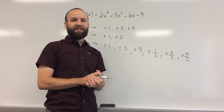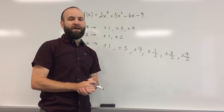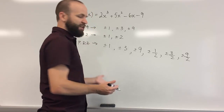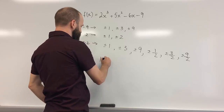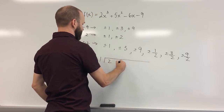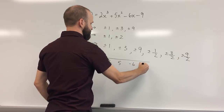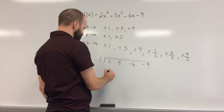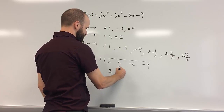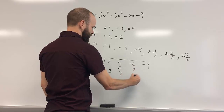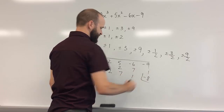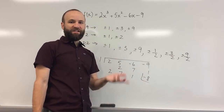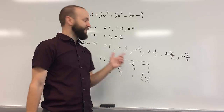Our next step is to use synthetic division and start trying the values off this list until we find a zero. The first thing we'd probably try is 1. Dividing the coefficients by 1 using synthetic division gives 2, 2, 7, 7, 1, 1, −8. That tells me f of 1 is −8, which means 1 is not a zero.